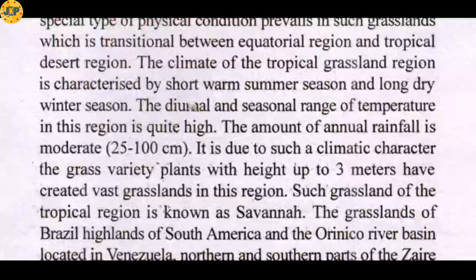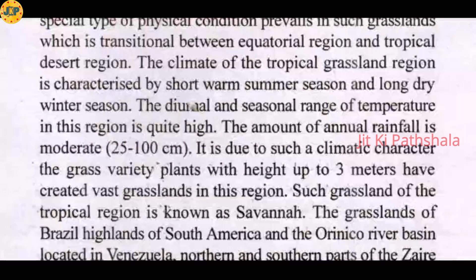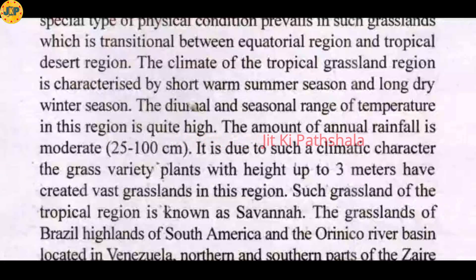The climate of the tropical grasslands region is characterized by a short warm summer season and a long dry winter season. In tropical grassland regions, the summer is short and warm, while the winter season is longer and dry with very little rainfall. The diurnal and seasonal range of temperature in this region is quite high.